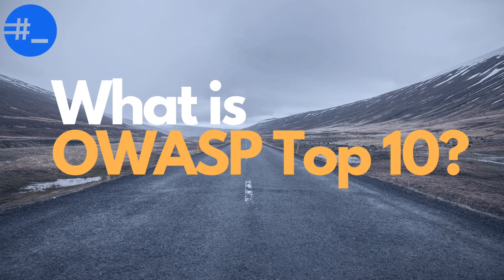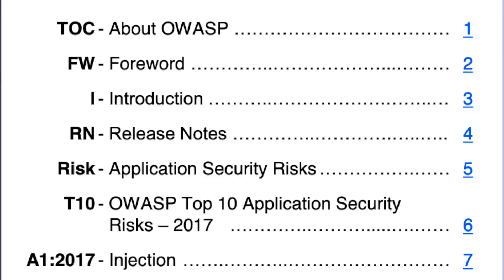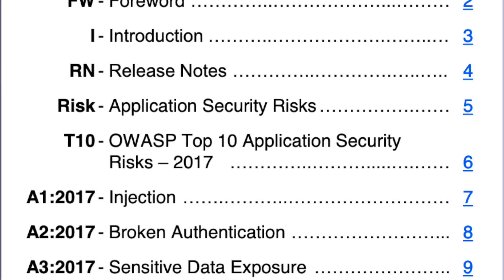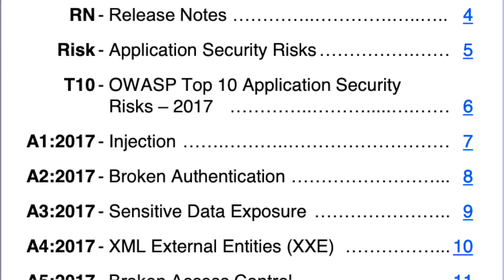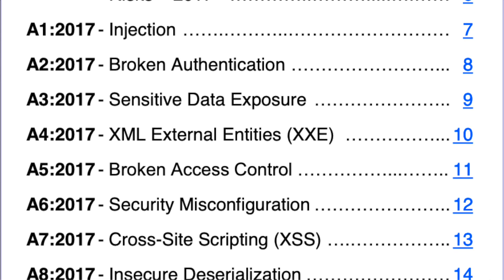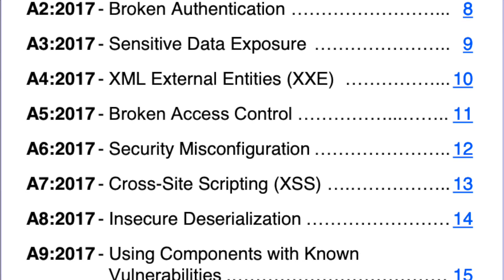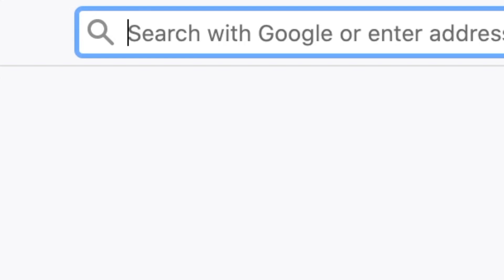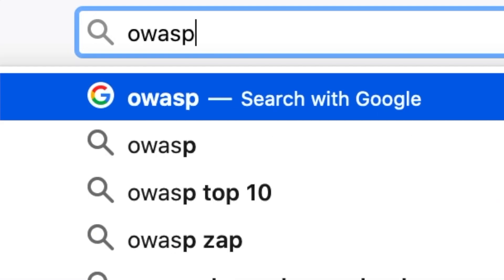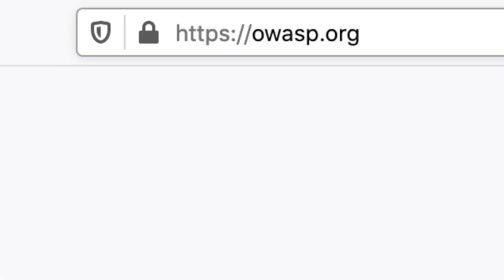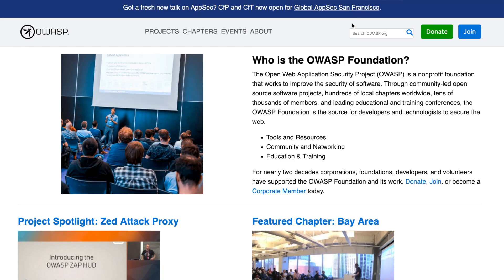What is OWASP Top 10? The OWASP Top 10 is a standard document which consists of the top 10 of the most impactful web application security risks in the world. The Open Web Application Security Project Foundation, OWASP, publishes a version each three years.